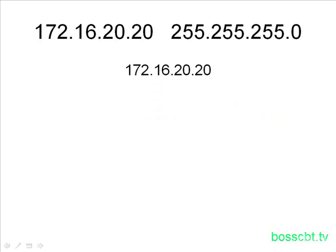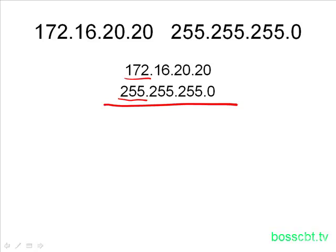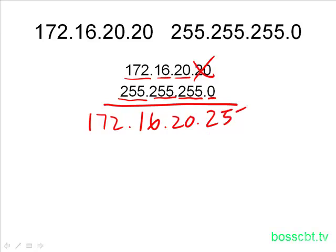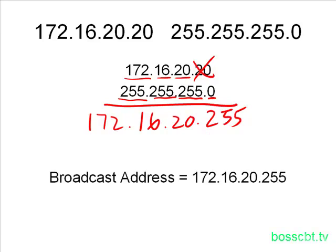Let's practice with another example. We write down our IP address and just below it the subnet mask, then start comparing. The first octet has 255 and 172 — we copy 172 and move on. The second octet has 255 again, so we copy that down. The third octet is 255, and the IP address has 20, so we copy it down. The fourth octet has a zero, so we ignore the value and write down 255. Our broadcast address is 172.16.20.255.